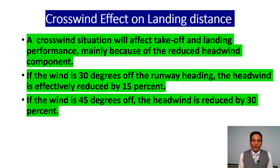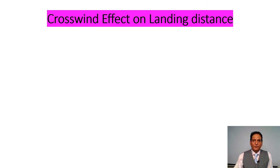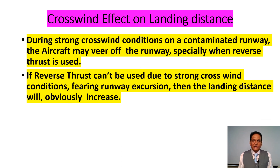Crosswind effect on landing distance: a crosswind situation affects takeoff and landing performance mainly because of the reduced headwind component. If the wind is 30 degrees off the runway heading, the headwind is effectively reduced by 15%; if the wind is 45 degrees off, the headwind is reduced by 30%. During strong crosswind conditions on a contaminated runway, the aircraft may veer off the runway, especially when reverse thrust is used. If reverse thrust cannot be used due to strong crosswind conditions, the landing distance will obviously increase.